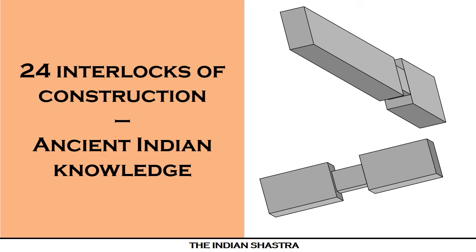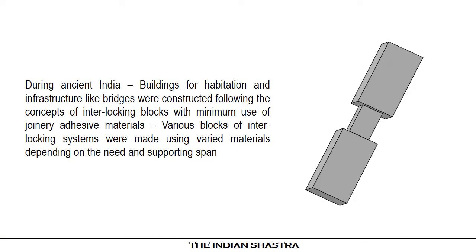In this video, let us see 24 interlocks of construction as per ancient Indian knowledge system. During ancient India, buildings for habitation and infrastructure like bridges were constructed following the concepts of interlocking blocks. With minimum use of joinery and adhesive materials, various blocks of interlocking systems were made using varied materials depending on the need and supporting span.